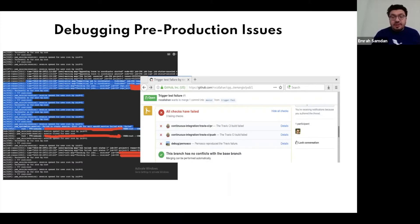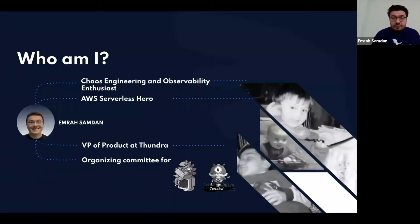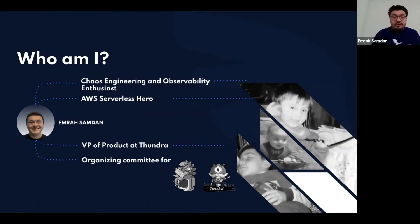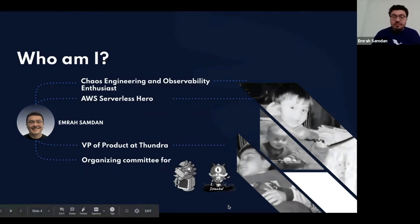Before that, let me introduce myself. I'm Emrah Samdan, an AWS Serverless Hero, working as VP of Product at Tundra. I'm very into chaos engineering and observability, and I'm proudly on the organizing committee of Serverless Days Virtual and Serverless Days Istanbul. We're also organizing AWS Community Day Turkey in the very near future.